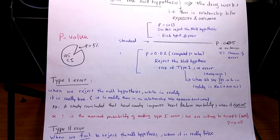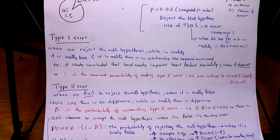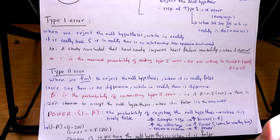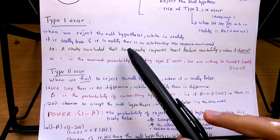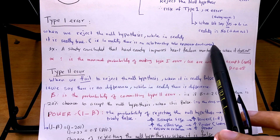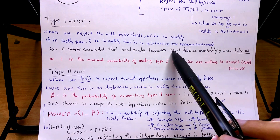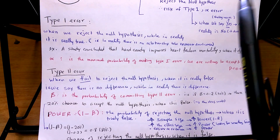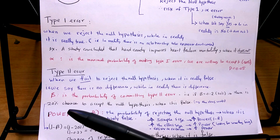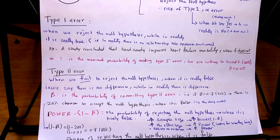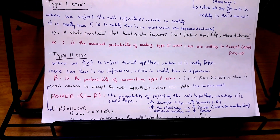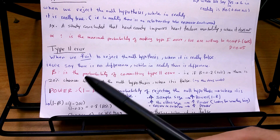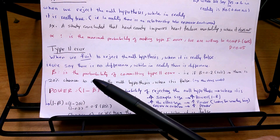Type 1 error is when we rejected the null hypothesis and said our drug really works, but in reality there is no relationship. For example, a study concludes that candy improves heart failure mortality, but it doesn't — that study committed a type 1 or alpha error. Type 2 error is when we fail to reject the null hypothesis and say there is no relationship, but there actually is a relationship and we should have rejected the null hypothesis.